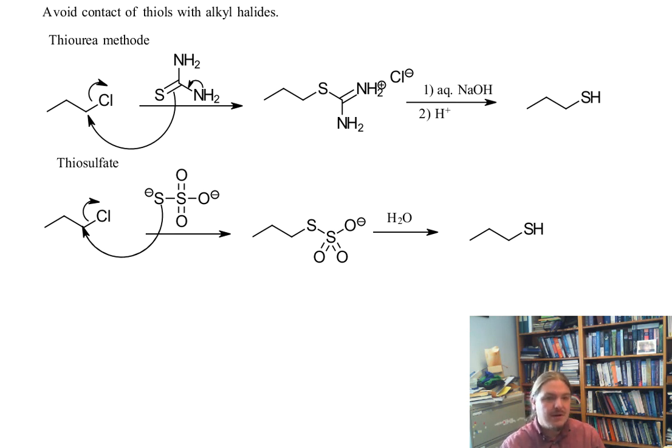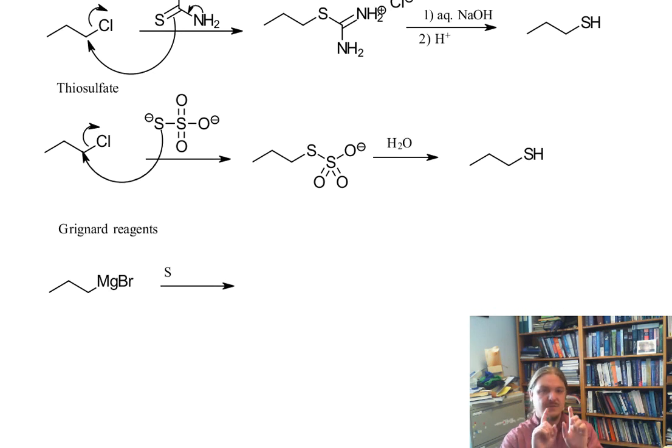The third option uses Grignard reagents and so this one turns the behavior around. The alkyl group now is attached to a magnesium halide so it's a Grignard reagent and it's going to react with elemental sulfur. And elemental sulfur actually forms chains or rings of sulfur atoms.